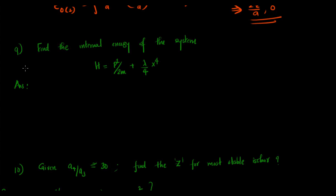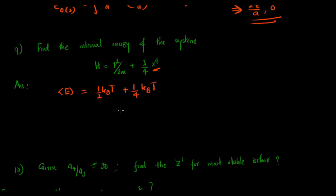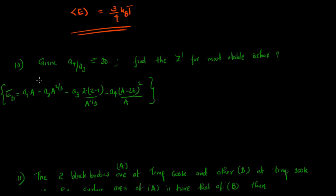The next question is from statistical mechanics: given the Hamiltonian H = p²/2m + λx⁴/4, we need to find the internal energy. By the equipartition theorem, the p²/2m term contributes (1/2)k_BT, and the x⁴ term contributes (1/4)k_BT from the generalized partition function. The total average energy is (3/4)k_BT.